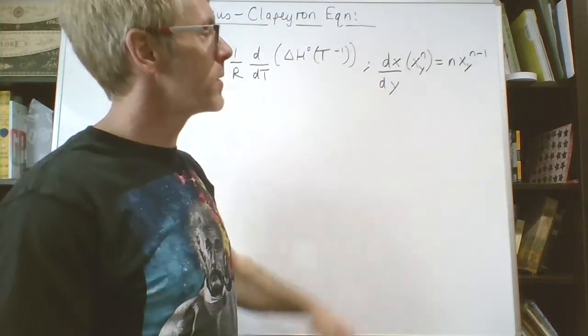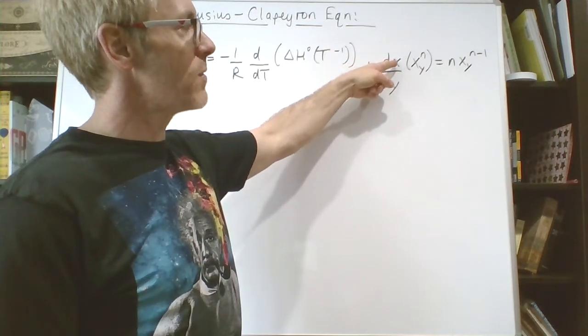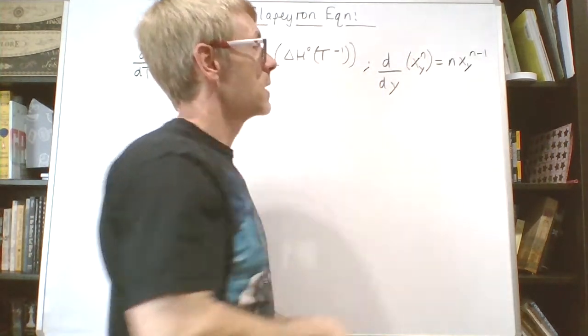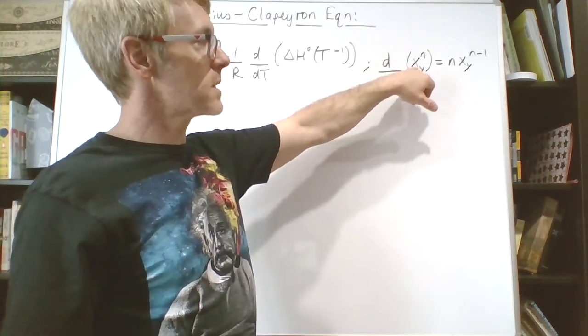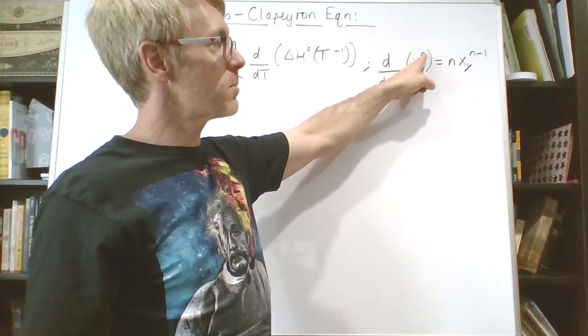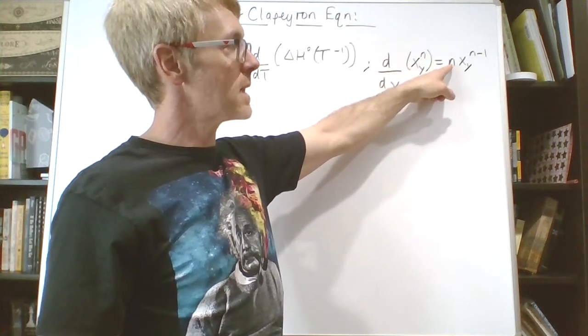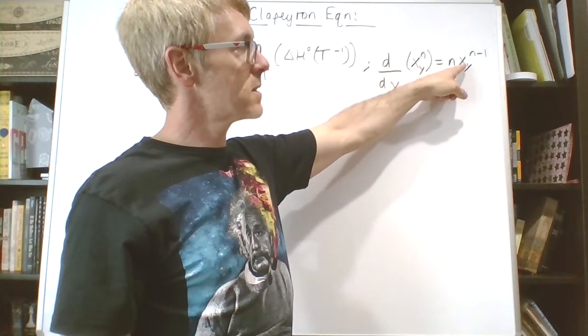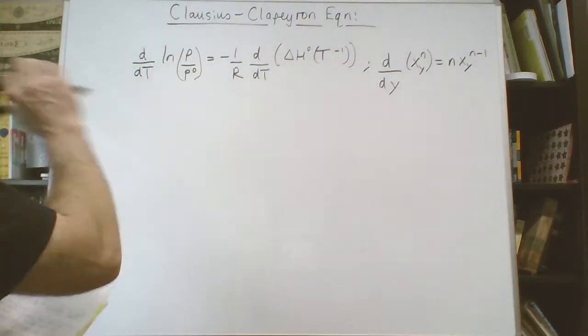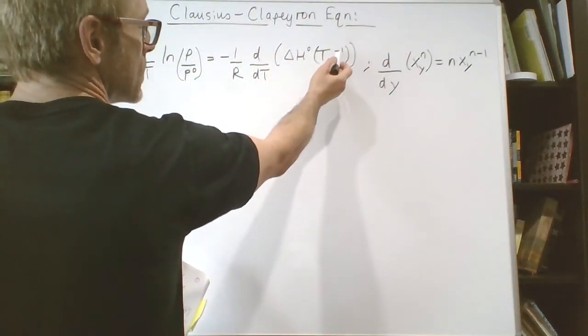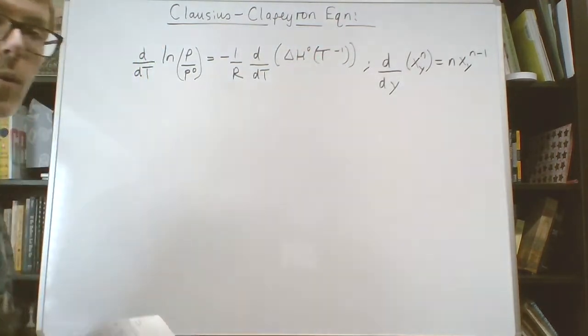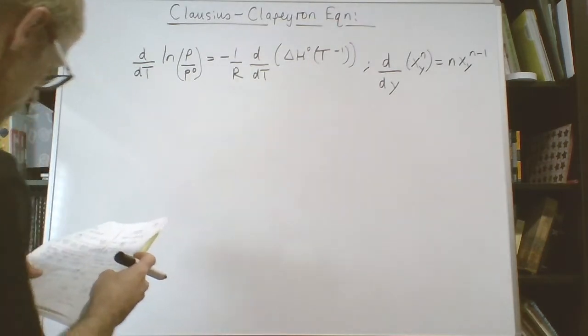Then you would take the exponent n as a coefficient and then raise the function to the n-1 power. If we apply that here, we're going to have to take on negative one, make that a coefficient, and then raise it to T^-1 minus 1.